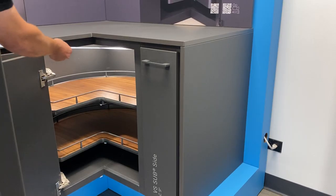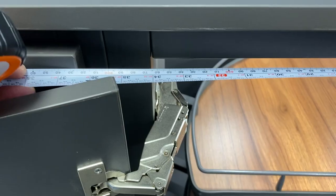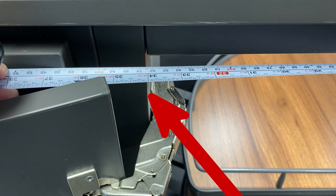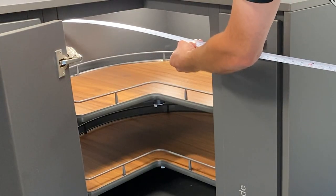Whether measuring for a kidney shaped or pie cut Lazy Susan the process is the same. You will need to measure the inside space of your corner cabinet. With the doors open take two measurements starting from the right side back wall to the inside edge of the door opening. Do this in both directions to make sure that the measurements are the same.